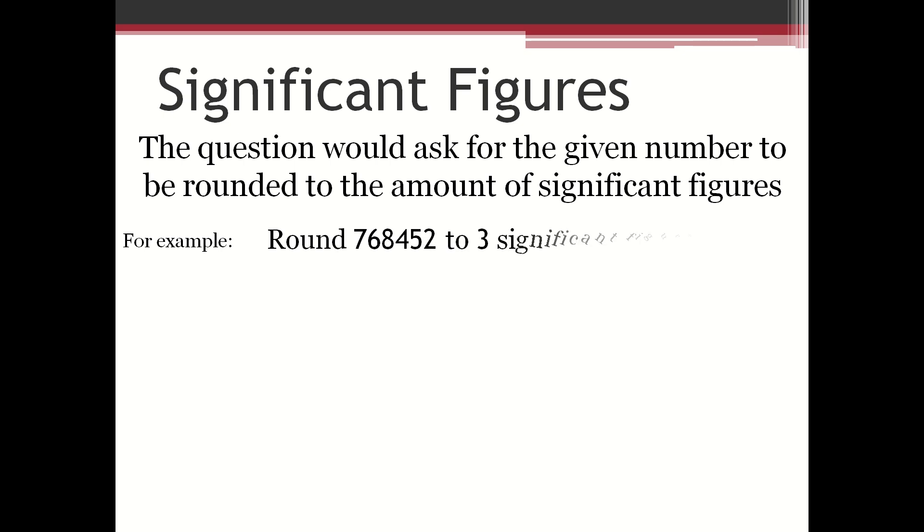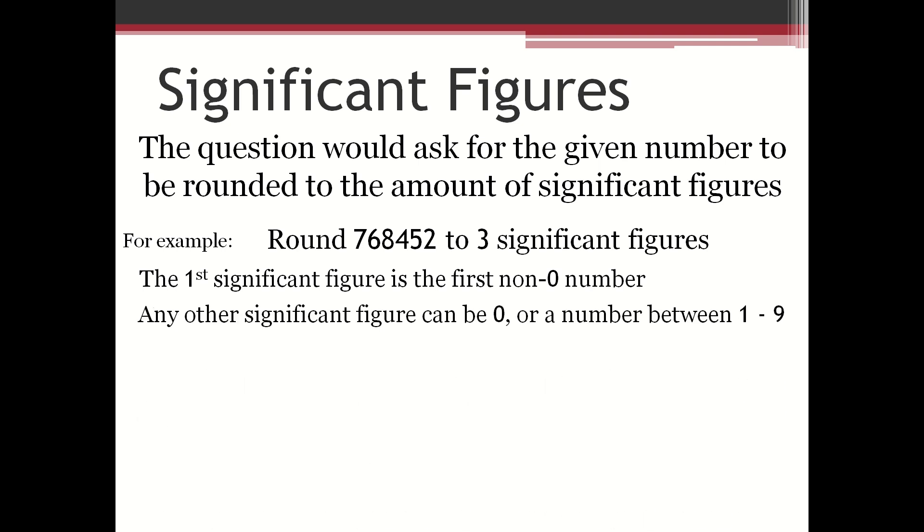For example, round 768,452 to three significant figures. The first significant figure is the first non-zero number. Any other significant figure can be zero or a number between one and nine.